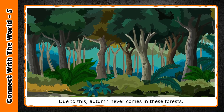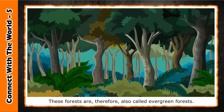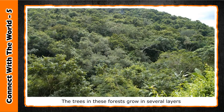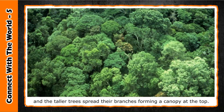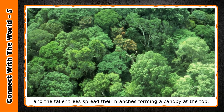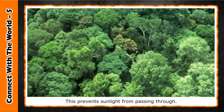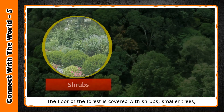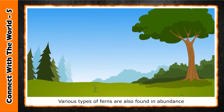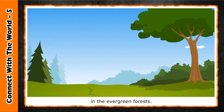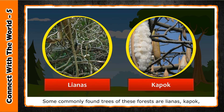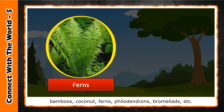Due to trees shedding leaves at different times, autumn never comes in these forests. These forests are therefore also called evergreen forests. The trees grow in several layers, and the taller trees spread their branches forming a canopy at the top, which prevents sunlight from passing through. The floor of the forest is covered with shrubs, smaller trees, creepers, and various types of ferns found in abundance.